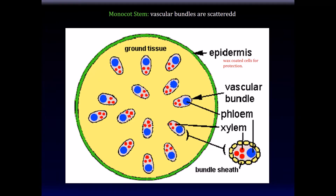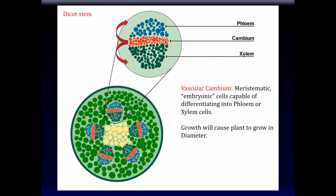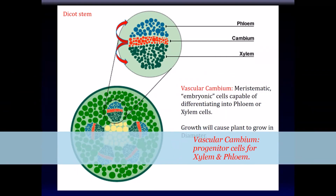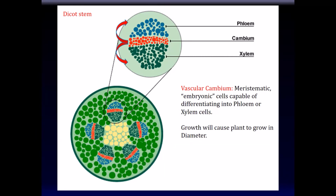Each vascular bundle contains xylem elements — the water and mineral transporting system — and phloem elements, which carry sugar and amino acids. In a dicot stem, these bundles are more organized. In each bundle, the phloem elements are on the outside and the xylem elements are on the inside. Each dot in the cross-section represents a straw running from the bottom to the top of the plant. Between the phloem and xylem is a red layer called the vascular cambium — progenitor cells that give rise to both phloem and xylem elements, also known as meristematic or embryonic tissue.